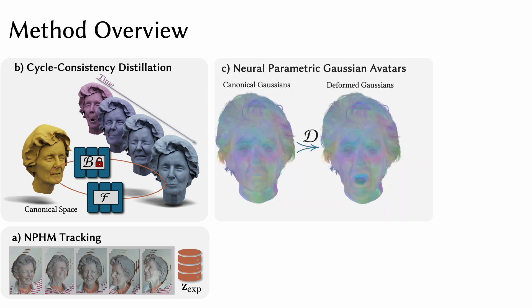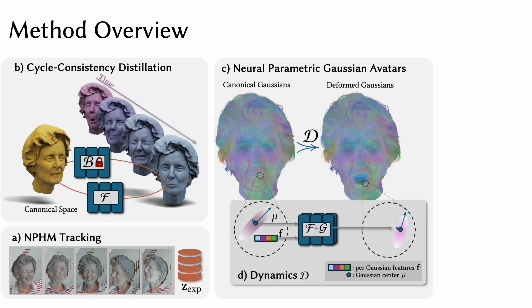Neural Parametric Gaussian Avatars are represented using a canonical Gaussian point cloud which is forward warped into pose-space using our dynamics module. To increase the overall dynamic capacity of our avatars, we attach per-Gaussian latent features to each primitive, which lifts the input of our dynamics module to a high-dimensional space that allows for more accurate representation of face movements.